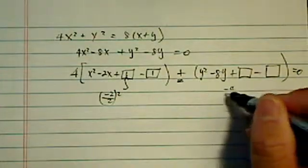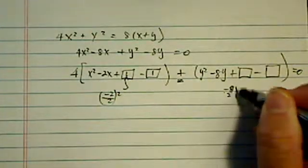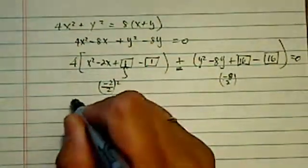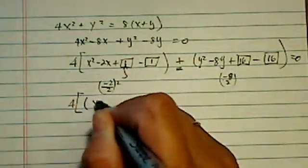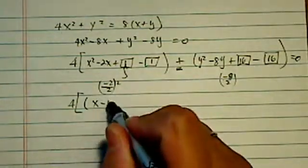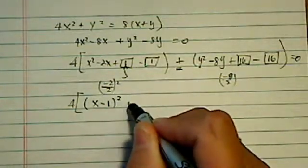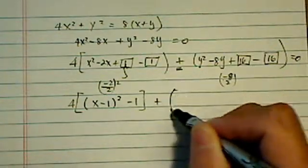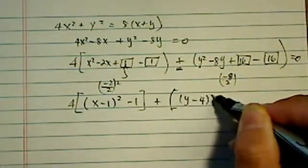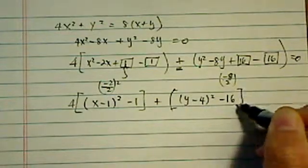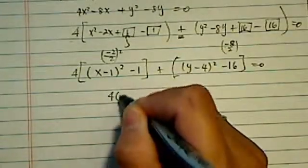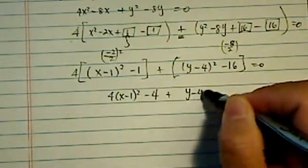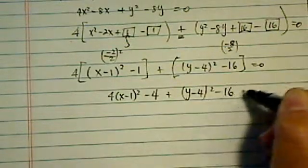All right. So here I'm going to put -2 divided by 2 squared, so it's 1 and 1. And -8 divided by 2 is 4, so it's 16 and 16. And the reason I'm doing that is so I can completely factor a complete square here. So I have (x - 1)² minus 1 plus, let's see what do I have here, (y - 4)² minus 16 equal to 0.